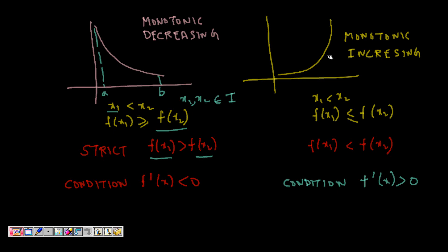Similarly, if it is monotonically increasing, it means the function is continuously increasing with respect to x. If x1 is less than x2 and both belong to the interval, then f(x1) is less than or equal to f(x2). For strictly monotonically increasing, f(x1) should be strictly less than f(x2). The condition for monotonically decreasing is f'(x) less than 0 in that interval, and if f'(x) is greater than 0, then it will be monotonically increasing.